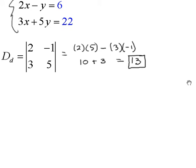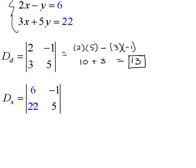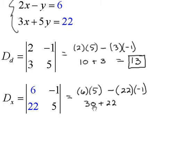Let's find the numerator of x. We replace the x coefficients (2 and 3) with the constants 6 and 22. The determinant is 6 times 5, minus 22 times negative 1 — that's 30 minus a negative 22, which becomes 30 plus 22, equaling 52.